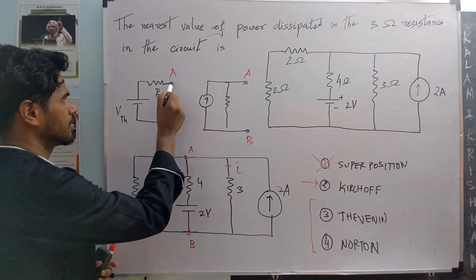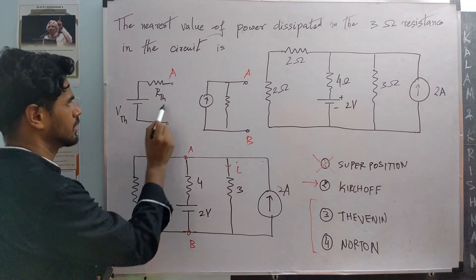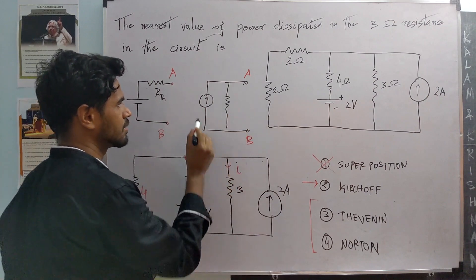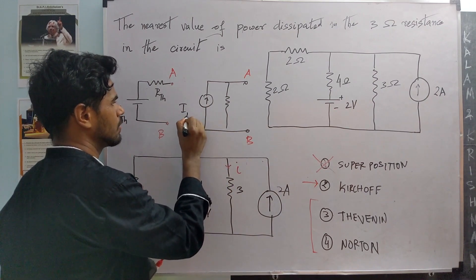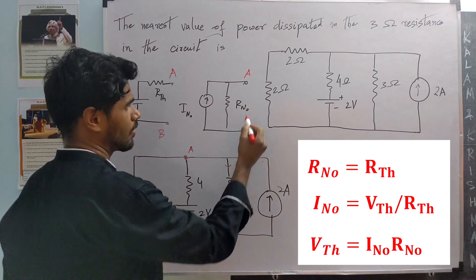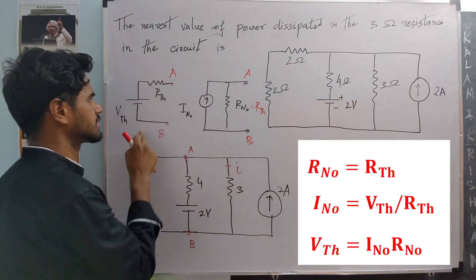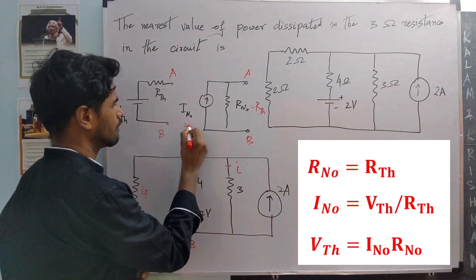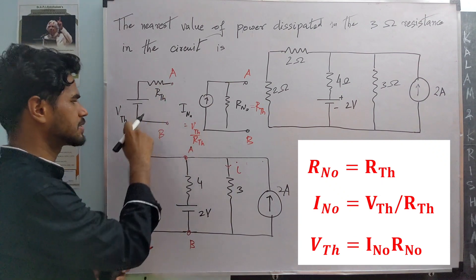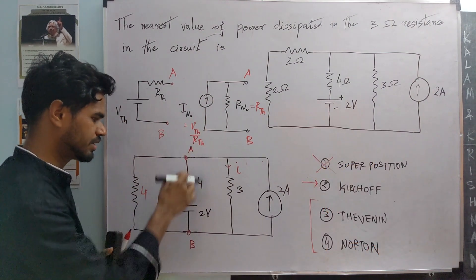The idea is to replace this section with its Norton's equivalent — a current source and a resistance in parallel. Between any two terminals A and B, if we have a voltage source V Thevenin and resistance R Thevenin, the Norton's equivalent between the same two nodes is a current source I Norton with resistance R Norton in parallel. R Norton equals R Thevenin and I Norton is given by V Thevenin divided by R Thevenin.